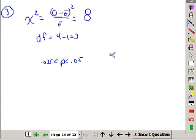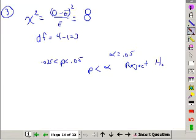If we compare that to alpha equaling 0.05, we can say p is less than alpha. So, we will reject H0.